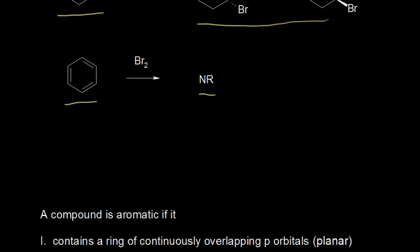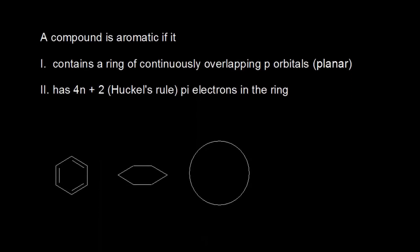Let's look at the criteria to determine if a compound is aromatic. A compound is aromatic if it contains a ring of continuously overlapping p orbitals. And so if the molecule is planar, that's what allows the p orbitals to overlap. It also has to have 4n + 2 pi electrons in the ring, where n is equal to 0, 1, 2, or any other positive integer. And this is called Huckel's rule.